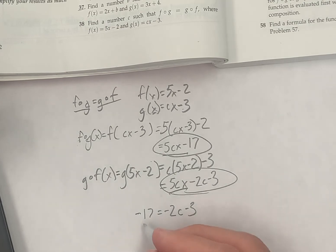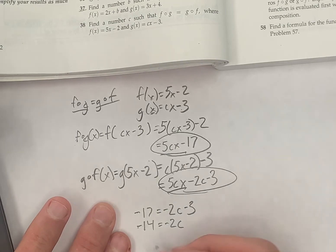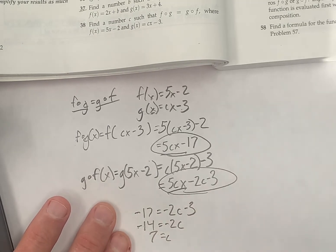Maybe I should add 3 to both sides. Minus 14 equals negative 2c. Maybe I should divide both sides by negative 2. That means c equals 7.